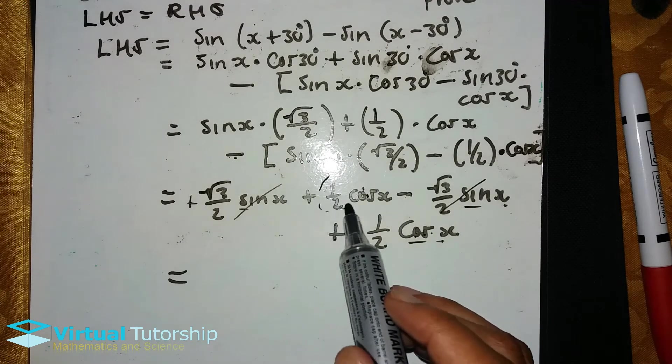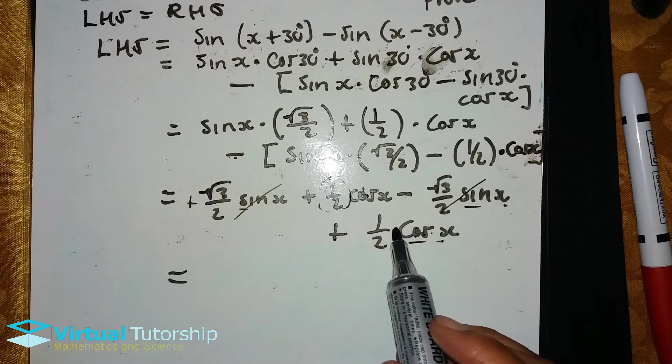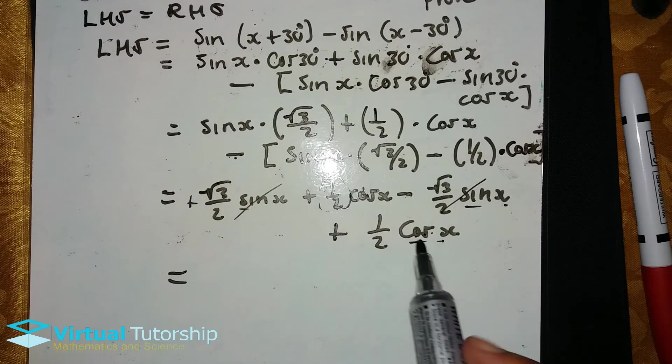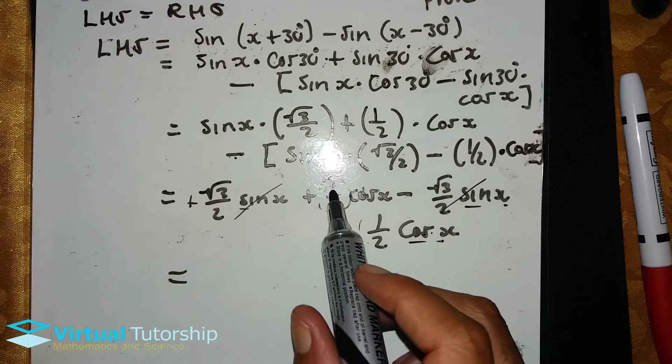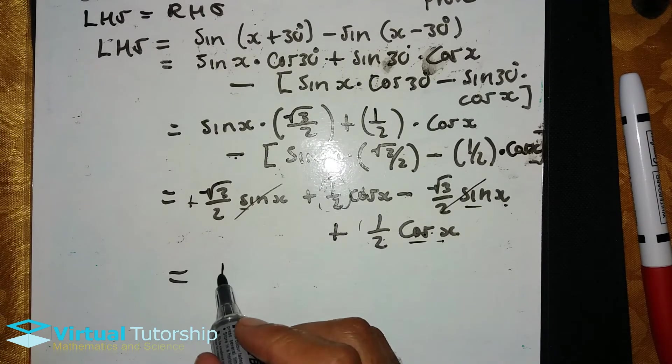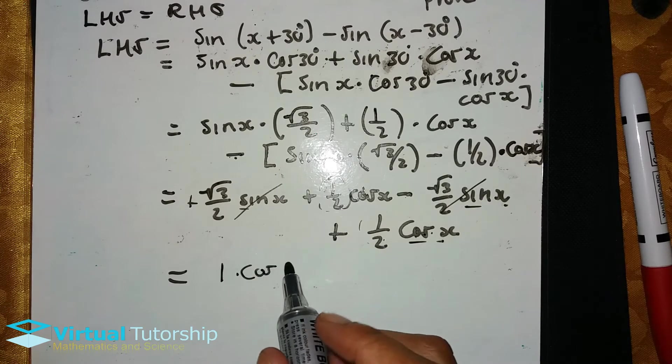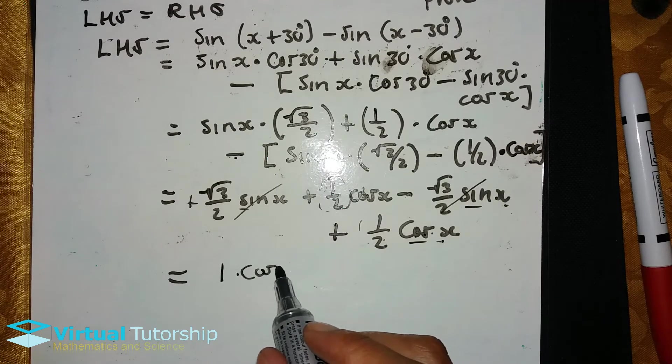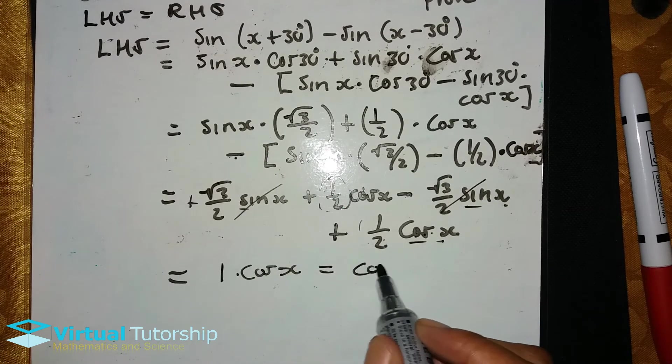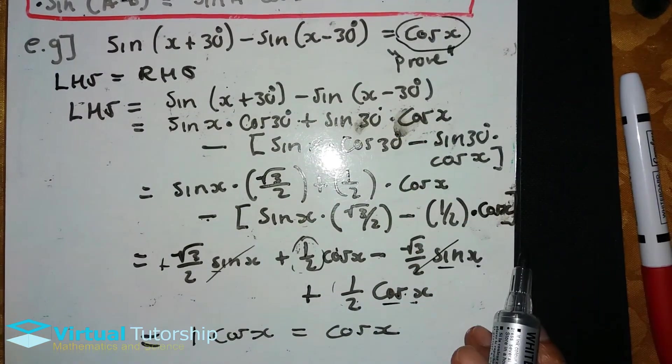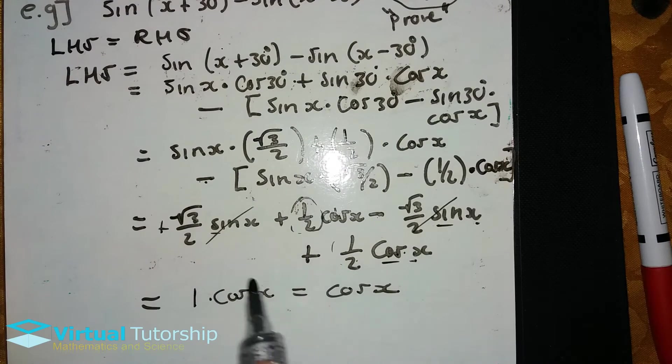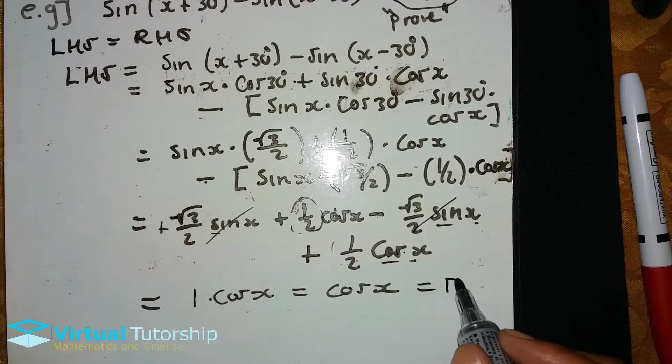And then the like terms are cosine x and cosine x: a half plus a half. So now the like terms, I add the coefficients. A half plus a half is 1, so it's 1 times cosine x, which is equal to cosine x, which is equivalent to the right hand side. So left hand side is equal to the right hand side.